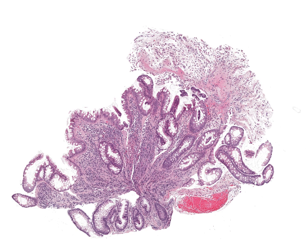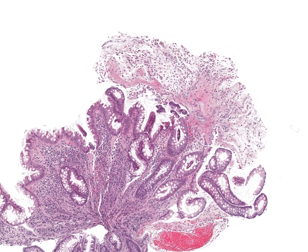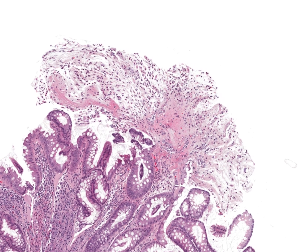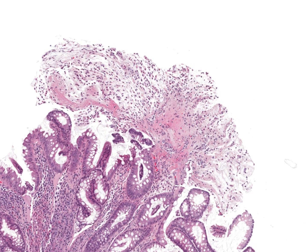Microscopic pseudomembranes are a characteristic feature of C. difficile colitis but are not always present. They are characterized by an adherent volcano-like outpouring of fibrin and mucus containing embedded degenerating inflammatory and epithelial cells.